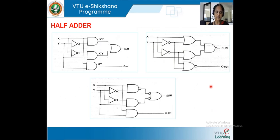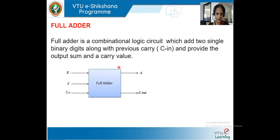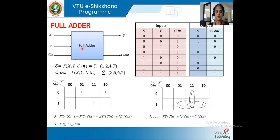Using a half adder, we can design a full adder. We use two half adders: the output of the first half adder is connected to the input of the second half adder. We have inputs X, Y, and C_in, and outputs sum and carry out. The C_in comes from the carry of the previous adder. With three inputs, we can have eight different combinations.